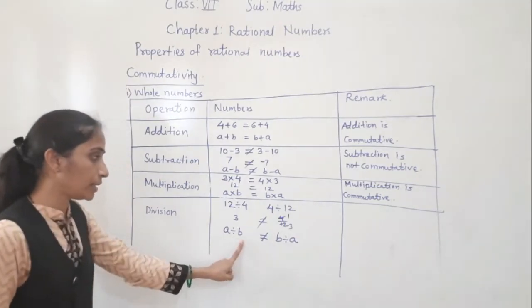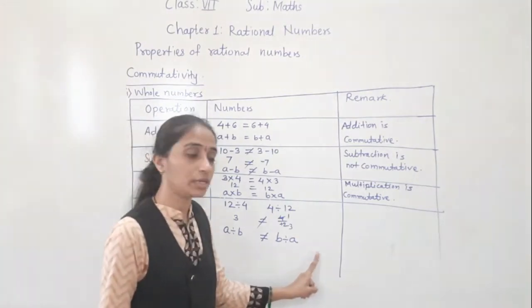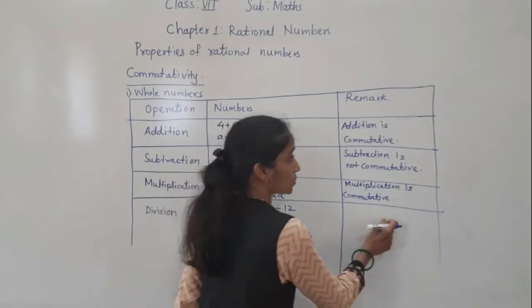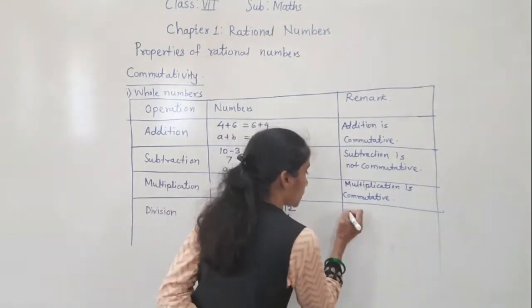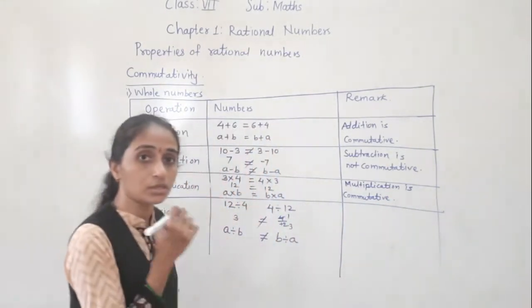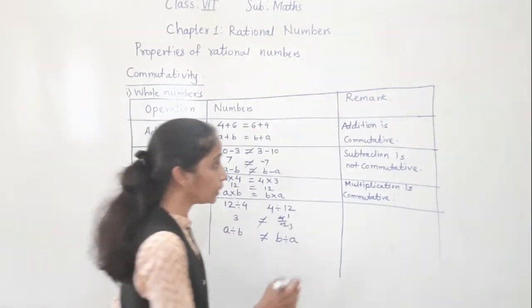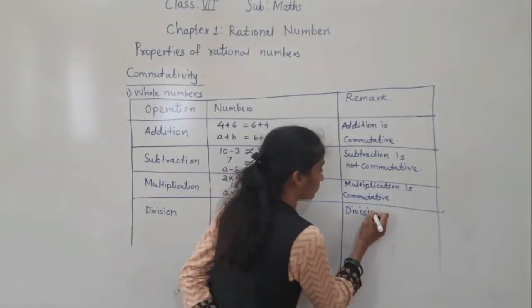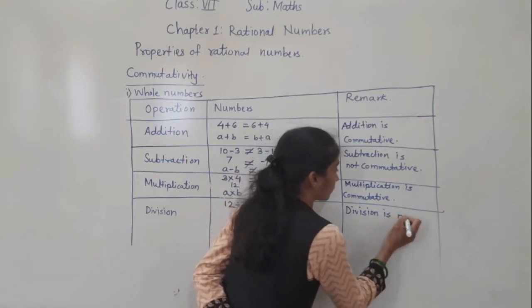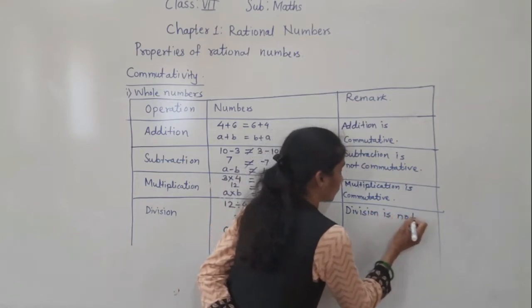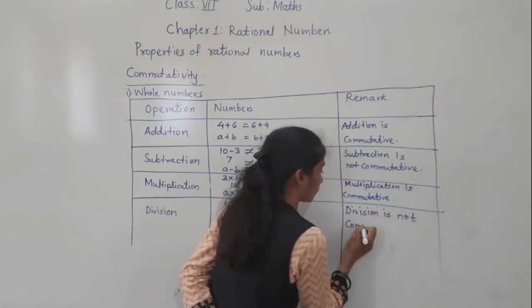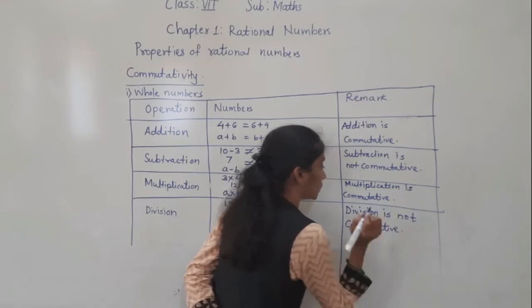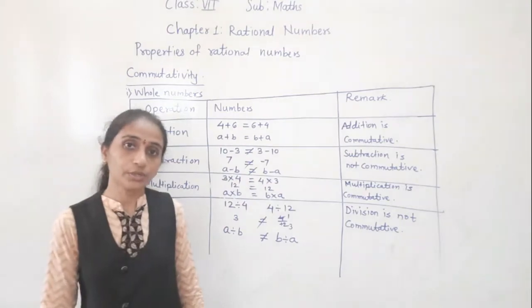So a divided by b is not equal to b divided by a. This means division is not commutative. This property does not work for division.